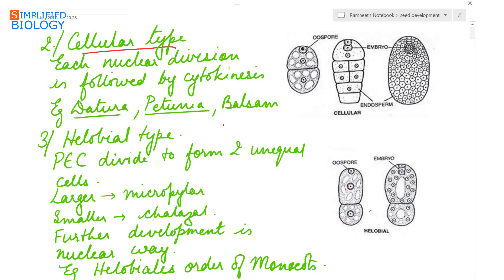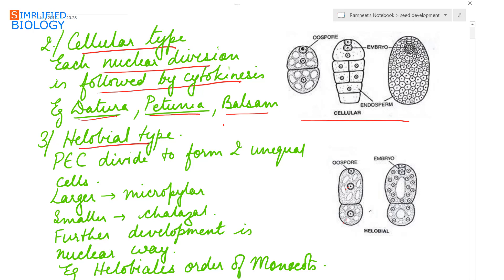The second type is the cellular type, where each nuclear division is followed by cytokinesis, so new cells are formed directly. Examples are Datura, Petunia, and Balsam.